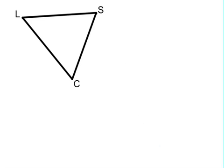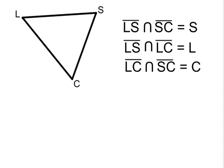Now let's get back to some geometry concepts. Here's a triangle, and here are three statements about the sides of that triangle. The intersection of side LS with side SC is point S — one of the vertices of the triangle. The intersection of side LS with side LC is point L. The intersection of side LC with side SC is point C.